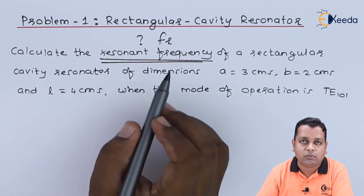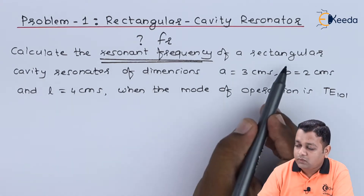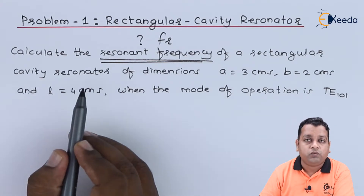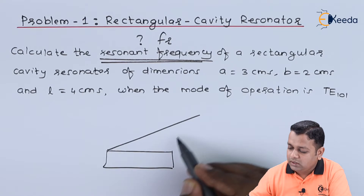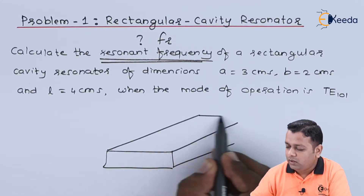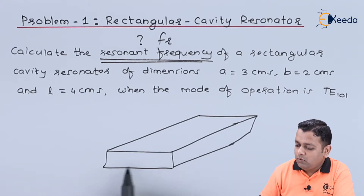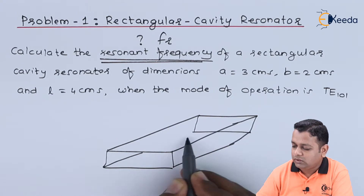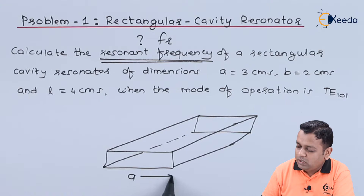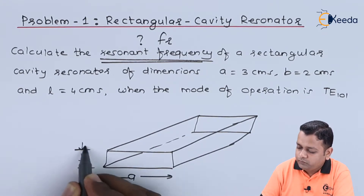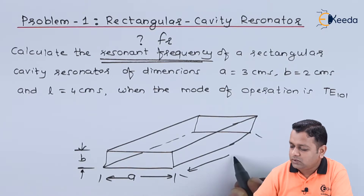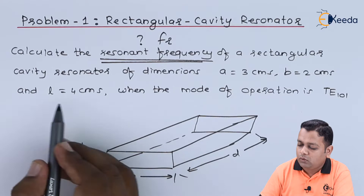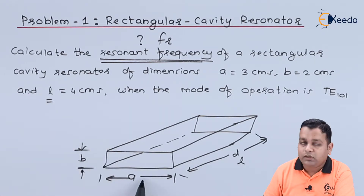The resonant frequency fr is to be determined. We have a rectangular cavity resonator — the schematic shows a rectangular cross section running along a third dimensional length. The internal dimensions of the cross section are small a and small b. The length of the cavity resonator is typically denoted by small d, but in this problem it is given as small l.